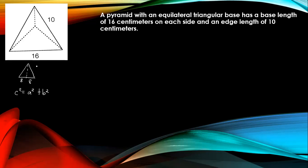So 8 plus 8 is equal to 16. C squared is 10, which is the edge length. So c squared equals 10 squared, and a squared equals 8 squared, giving us 10 squared equals 8 squared plus b squared. This b squared is our slant height.